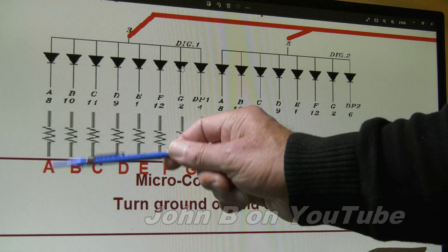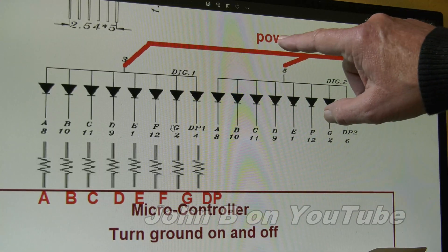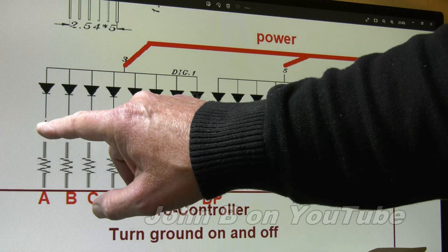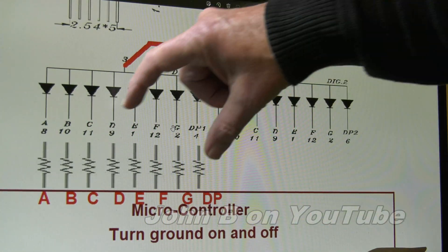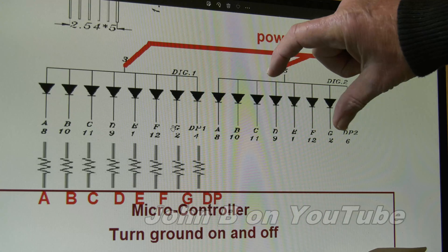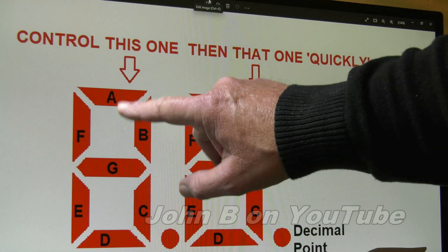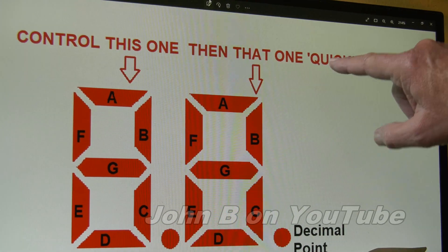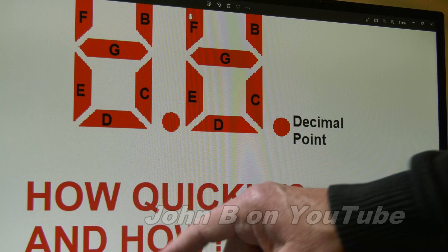If you turn the pin high, the segment hasn't got a ground, so it stays off. If they've got common power, and the cathodes like A is joined to that A, B is joined to that B, I'm going to have the same digit on each display. How do you solve that problem? Control this one first, then that one, quickly. How quickly, and how do you control them?